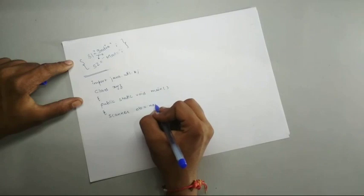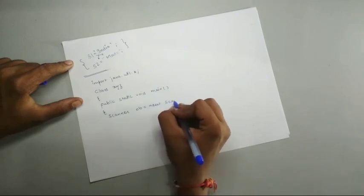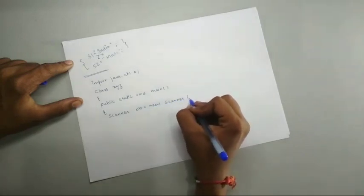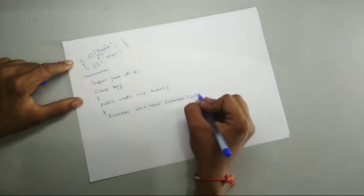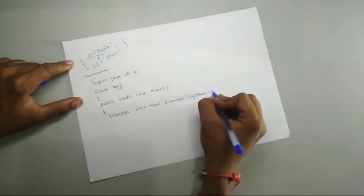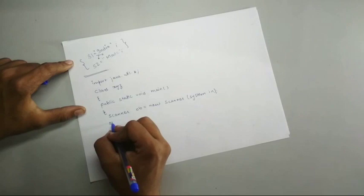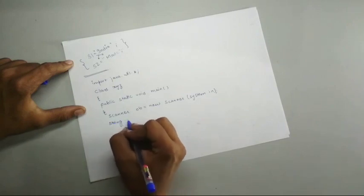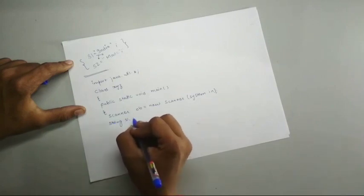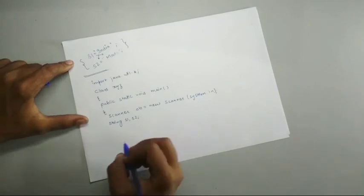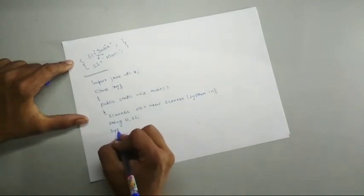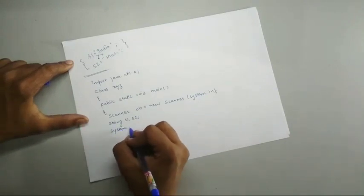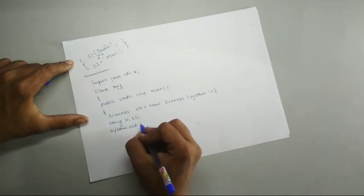Then we will make the scanner class object, we can say ob is equal to new scanner and we will attach the system dot in for the input string. After that take the two variables, that is one is string s1, another is string s2. And now the actual execution, that means actual input process will start.